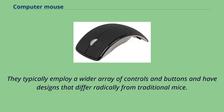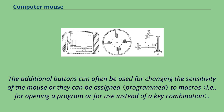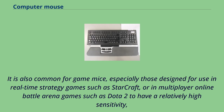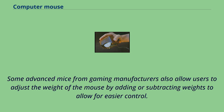The additional buttons on gaming mice can often be used for changing sensitivity or assigned to macros. It is common for game mice — especially those for real-time strategy games such as StarCraft, or MOBA games such as Dota 2 — to have high sensitivity, measured in dots per inch, which can be as high as 25,600. Some advanced gaming mice also allow users to adjust the weight of the mouse by adding or subtracting weights for easier control.